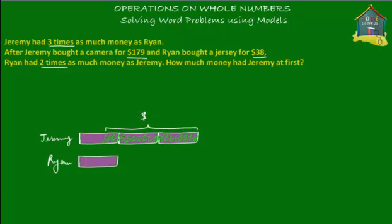Maybe it was more or less than the shaded part, but we're just assuming that for now. Ryan also made a purchase — he bought a jersey and spent $38. So this shaded part here represents the $38 that Ryan spent. What Ryan is left with is this remaining block — let's use another color. This pink box of money is what Ryan is left with, and this is how much Jeremy is left with.